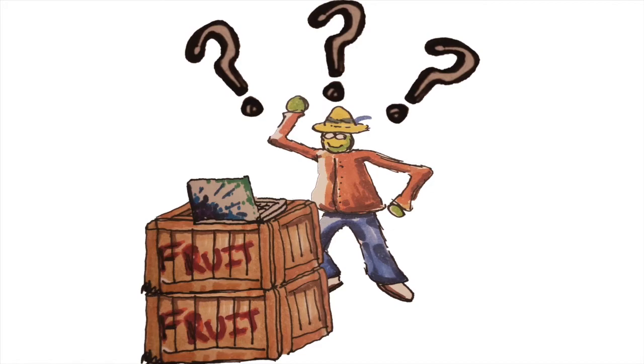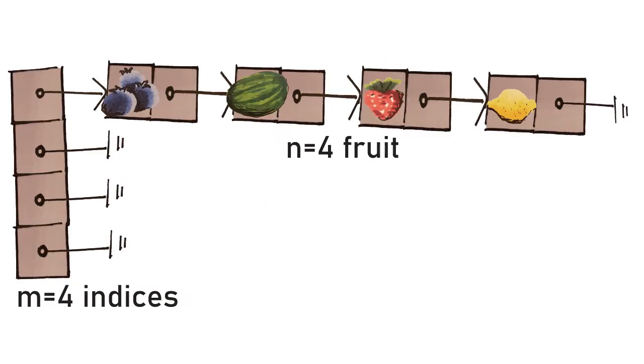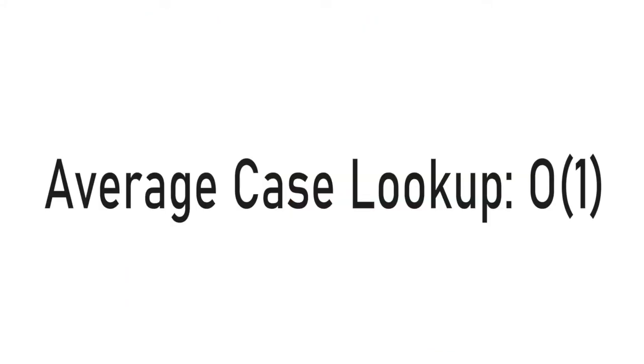So, how is a hash table going to help us look up our fruits any faster than linked lists? Imagine you have n fruits, and a table with n indices. All of the fruits could be stored in one chain, which is basically a linked list. But, in the best case, we could have only one fruit at each index.